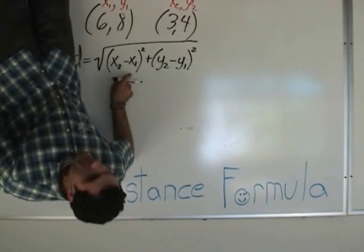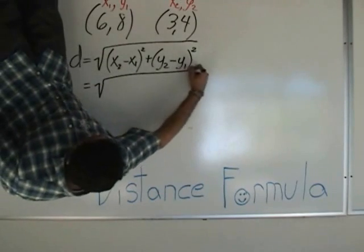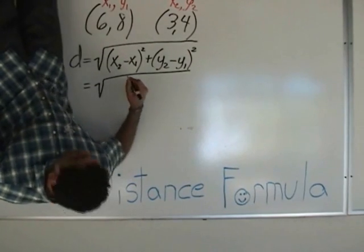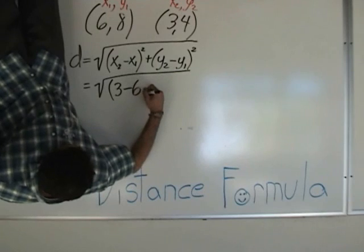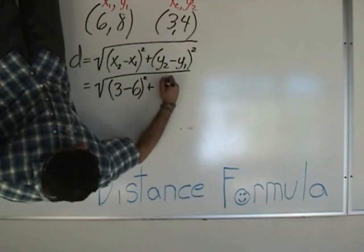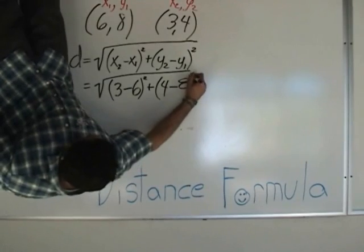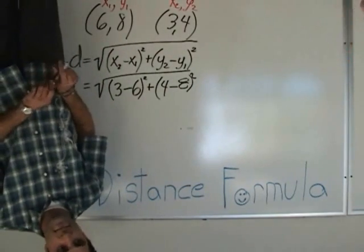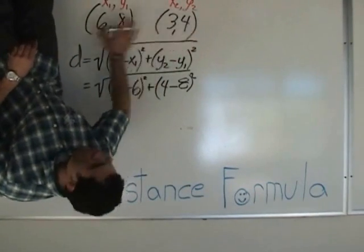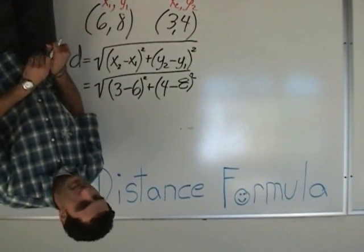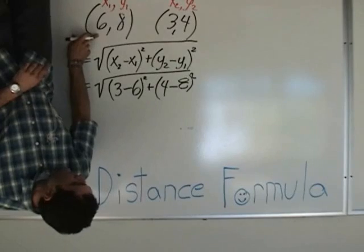So here we go — long square root again. What is x2 minus x1? Let's write it. What's x2? So we have: 3 minus 6, squared, plus 4 minus 8, squared. Student: Can you make 3 and 4 the first one? Teacher: Yes, that's a good question. It doesn't matter what you choose as your x1 or y1 — it doesn't matter at all. This could have been x1, y1, and this could have been x2, y2. It's all good. Do the math right on your paper.